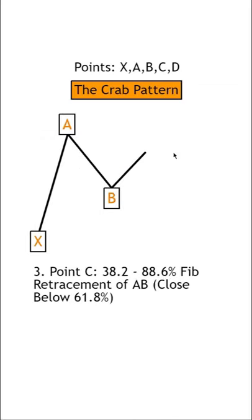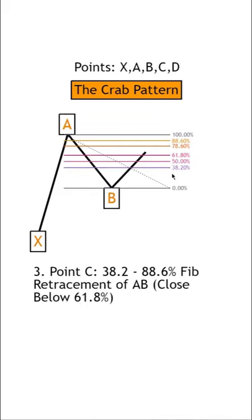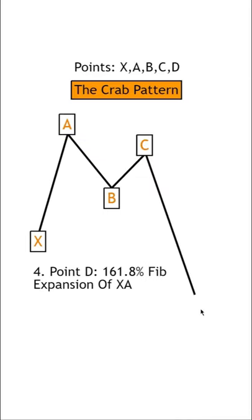Now to find point C, we need a Fibonacci retracement of move A to B that lands between 38.2 and 88.6, without closing past 61.8. And point D has two requirements,